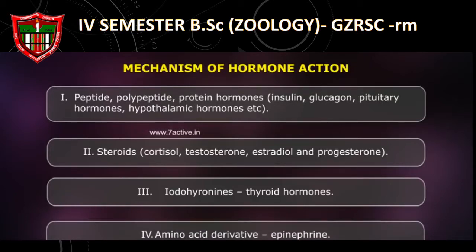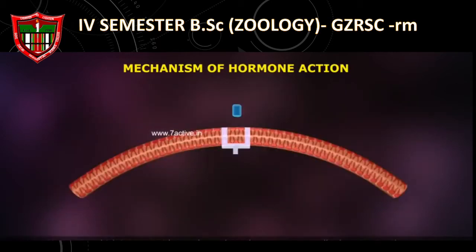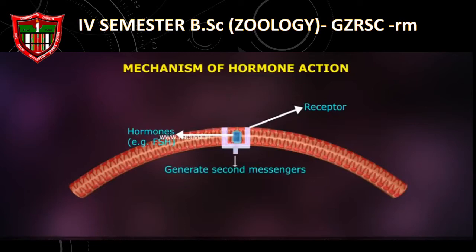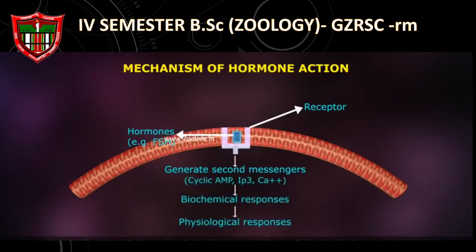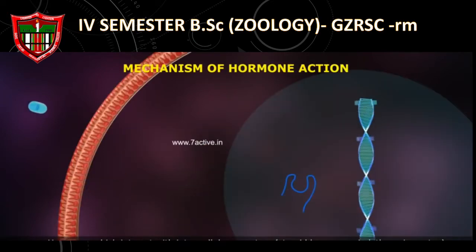Number 4: amino acid derivatives — epinephrine. Hormones which interact with membrane-bound receptors normally do not enter the target cells, but generate second messengers like cyclic AMP, IP3, calcium ions, etc., which in turn regulate cellular metabolism.